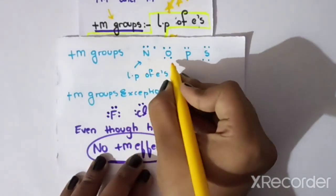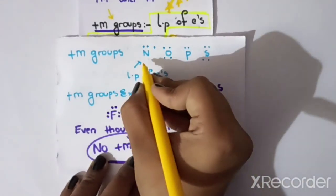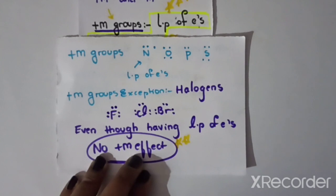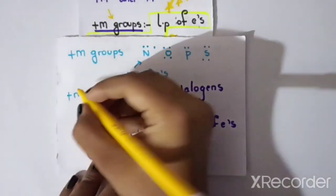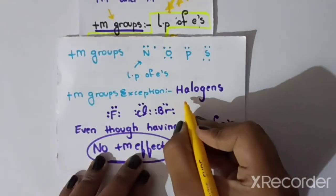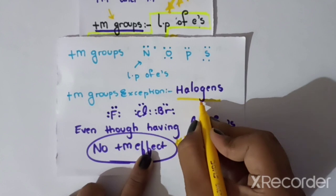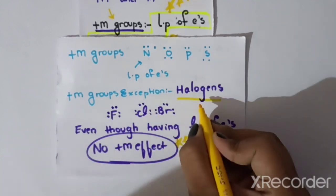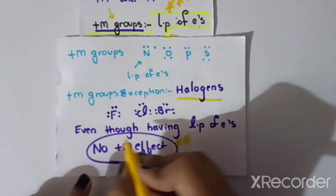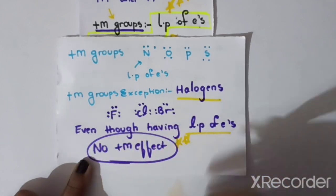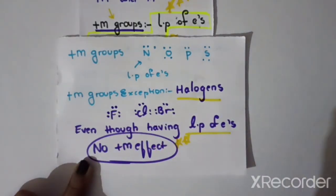Atoms with lone pairs of electrons are nitrogen, oxygen, phosphorus, and sulfur. If we have lone pairs of electrons, these are the plus M groups, because these electrons are donated to the conjugated system. However, in the plus M group, there is an exception: halogens. Even though halogens have lone pairs, they do not show the plus M effect.